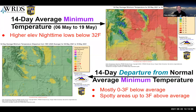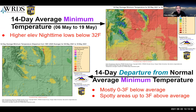Moving on to temperature: for the last two weeks, this is the minimum average temperature. We're above freezing for most of the state, except at higher elevations where nighttime lows are still below freezing. Compared to average, most of the state was below normal — except some isolated pockets off the Bighorns and other ranges where temperatures were up to three degrees above average over the two-week period. By and large, the state as a whole was mostly zero to three degrees below normal.